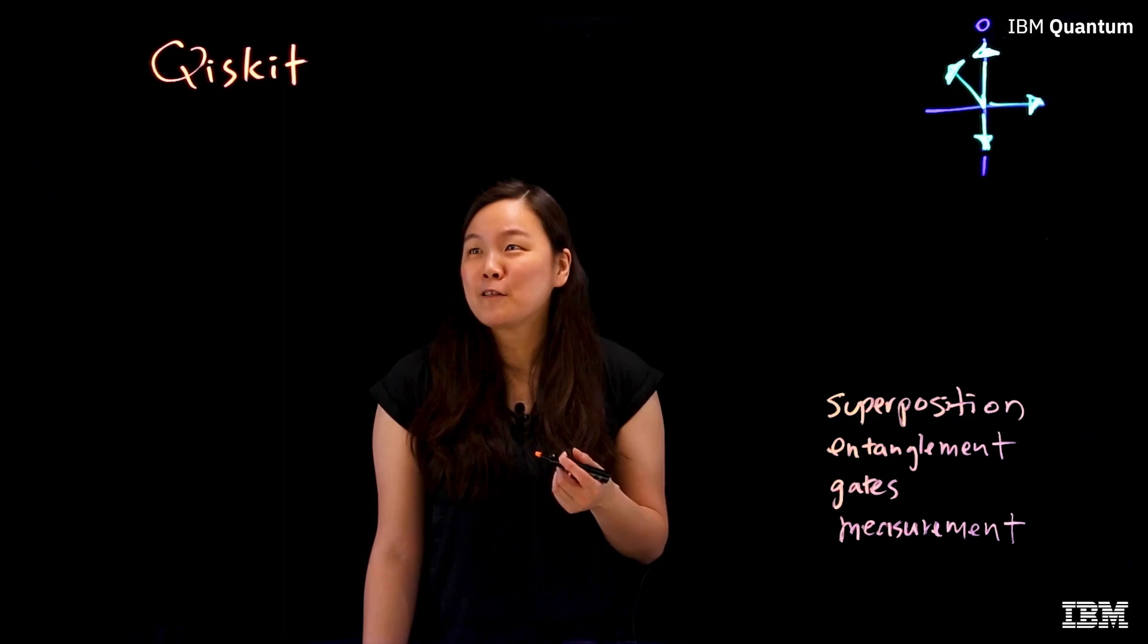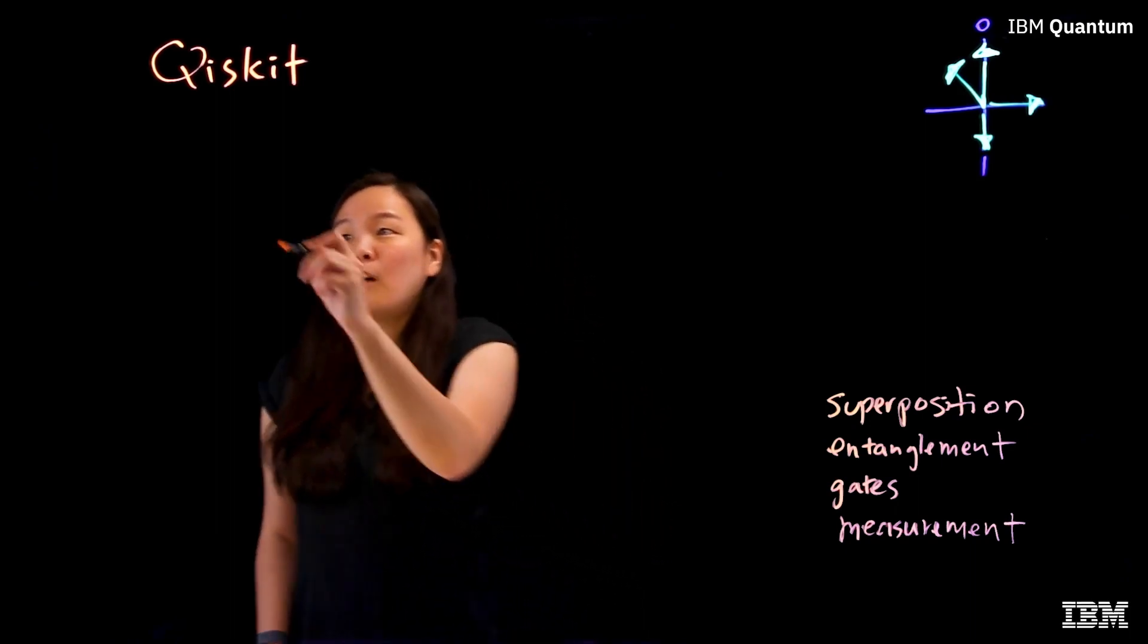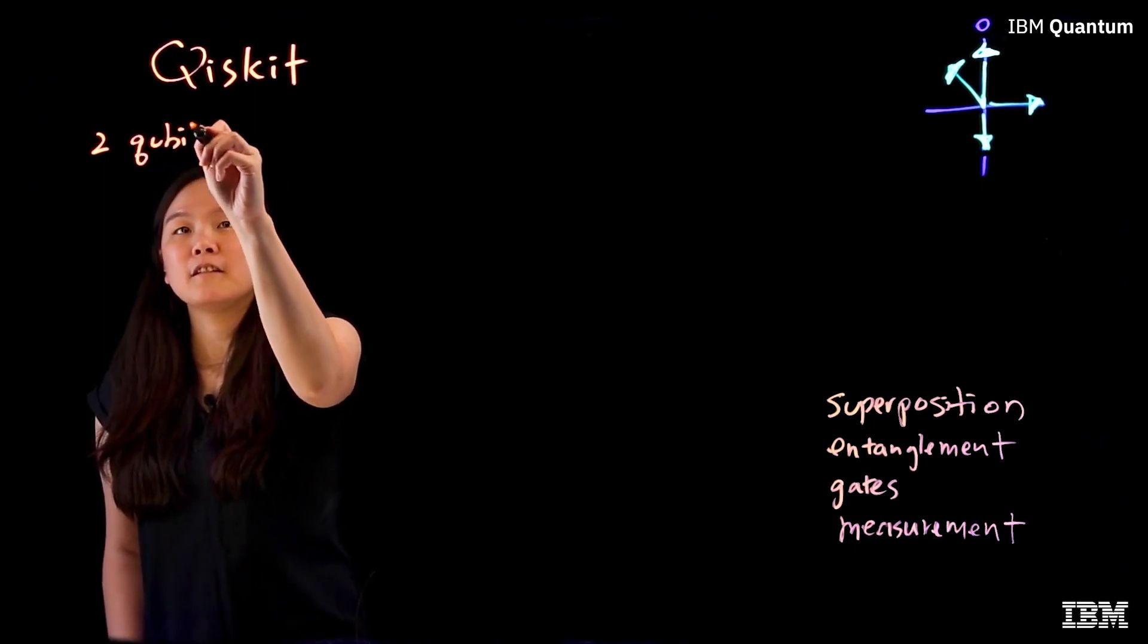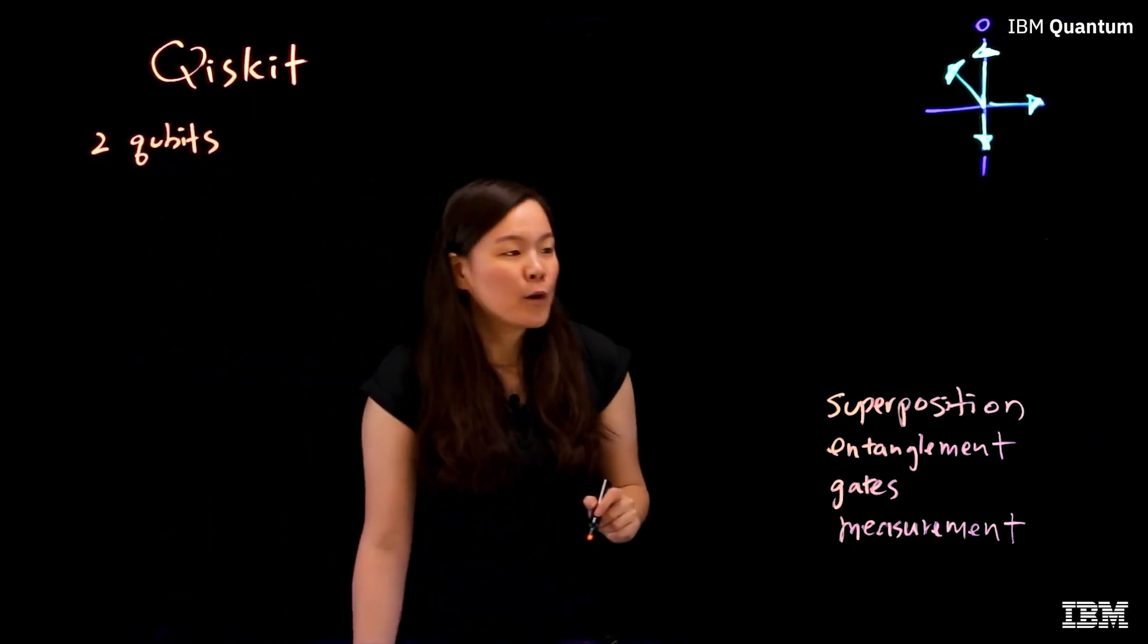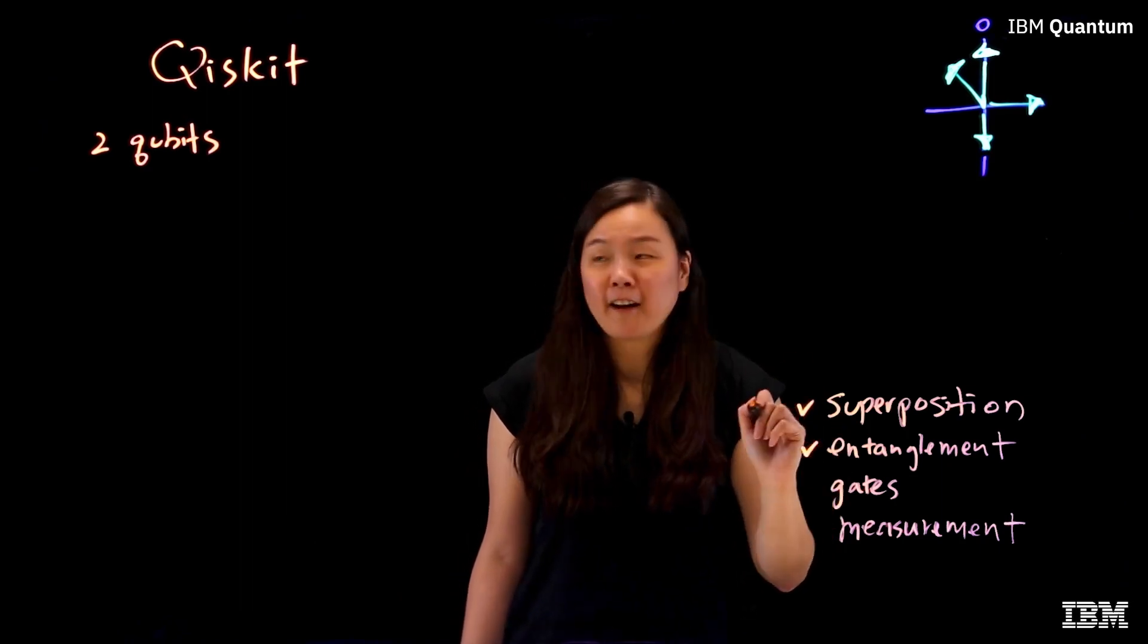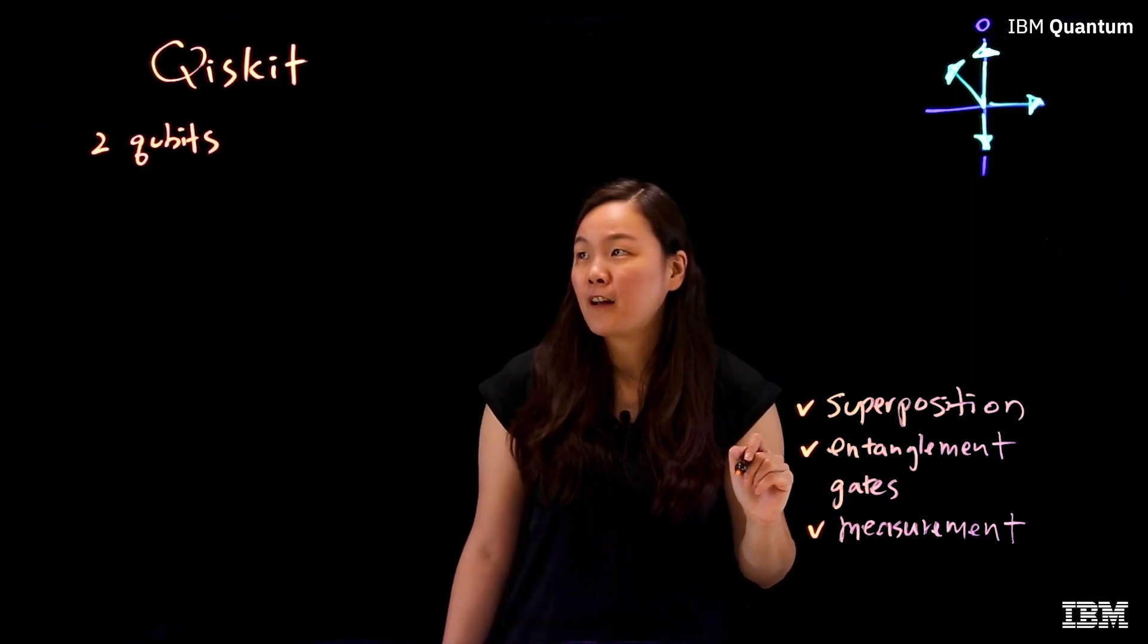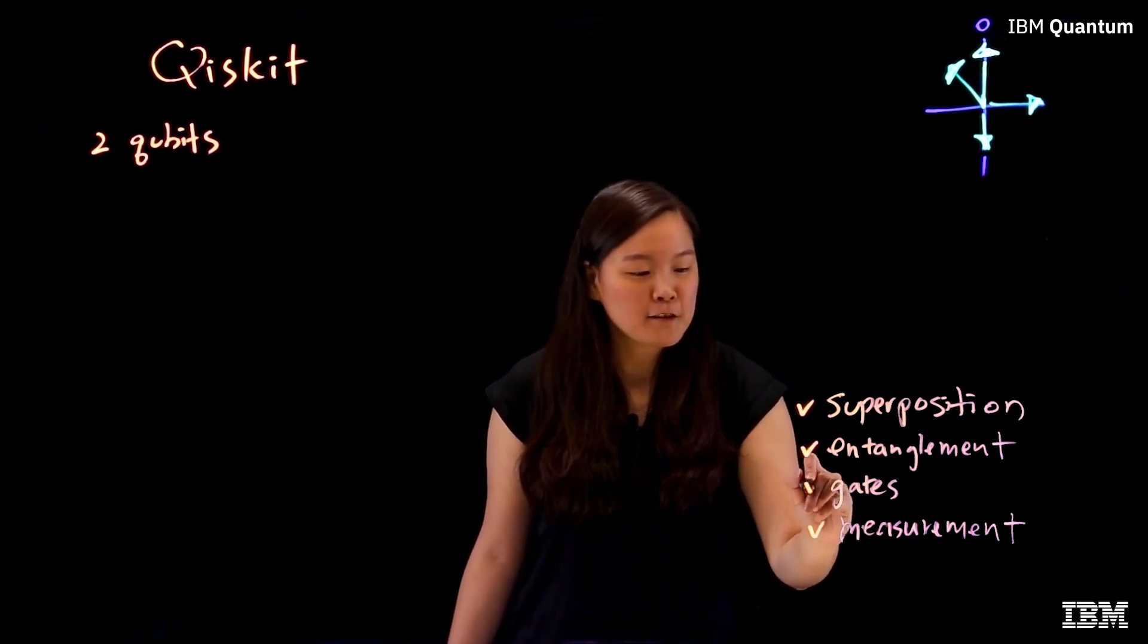So let's write a simple program in Qiskit. In this program, we will use two qubits. We will put one into superposition, entangle it with the other, and then do a measurement of both of them. And of course, all of this is done using gates.